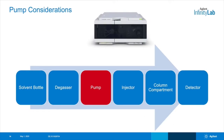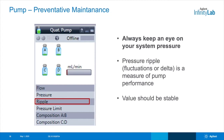Now let's take a look at the pump. One of the main measures of system performance for your LC is the system pressure. Always keep an eye on your system pressure. Even when your system is working properly, it's helpful to record the pressures for the system with your method and even at different points of tubing connection. This can help you identify quickly when your system might be changing or needing a bit of preventative maintenance. The pressure ripple can also be monitored in ChemStation. This is a useful diagnostic tool.